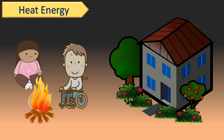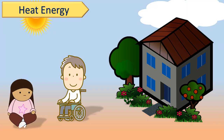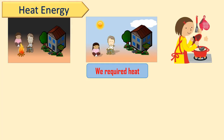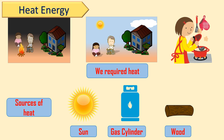In winter, when we feel cold, we sit near the fire or in the sunlight. Also, in the kitchen, your mother cooks food on gas or stove. You can see we require heat energy for various purposes in daily life. The earth receives heat in proper quantities from the sun, or we get heat by burning fuel like LPG gas, petrol, wood, etc.